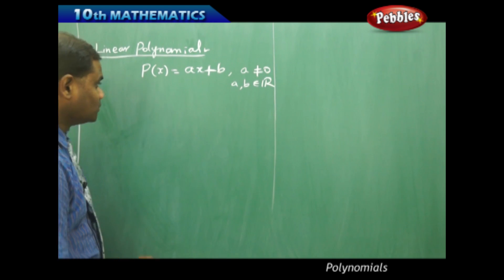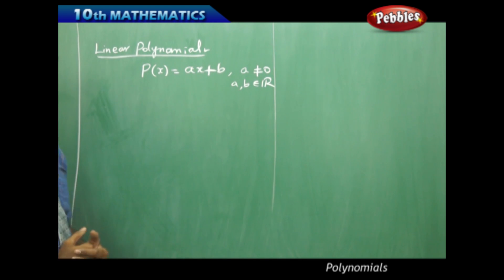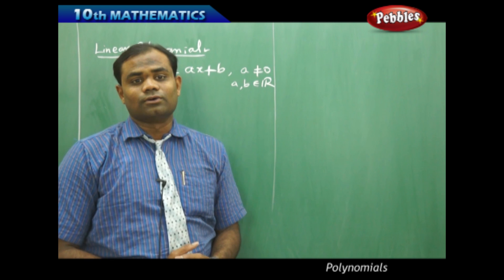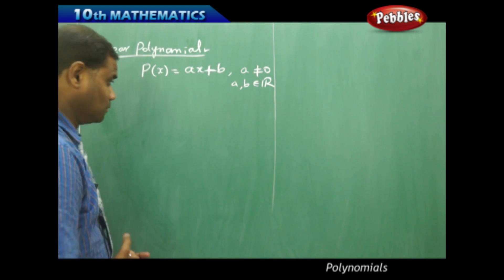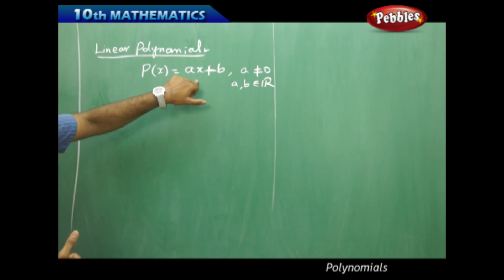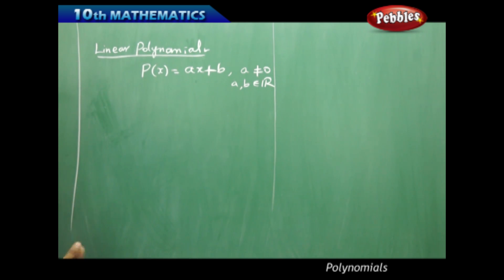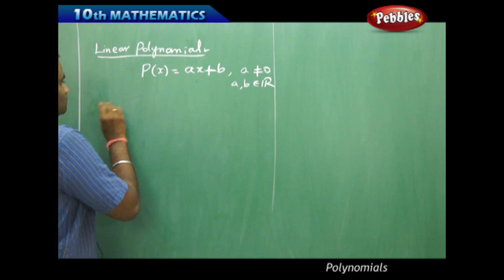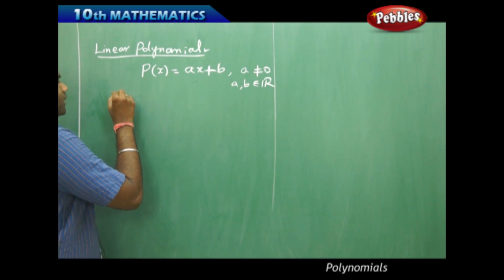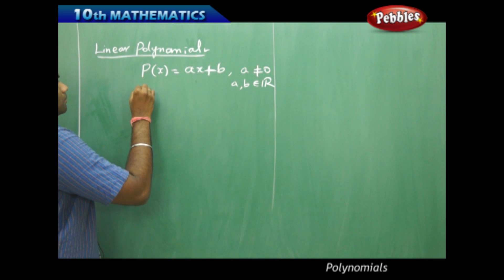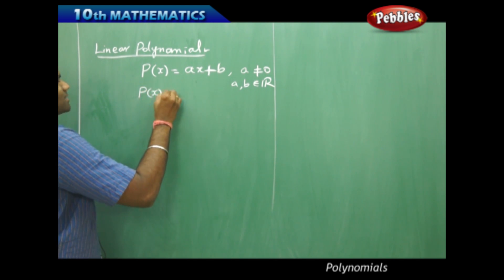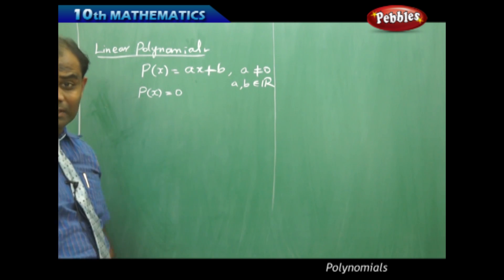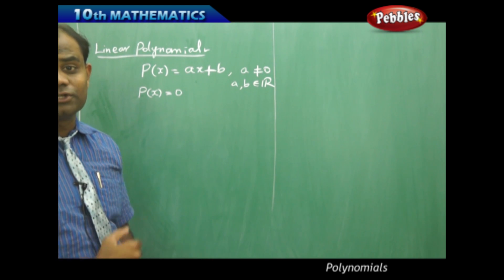They're real numbers. Now, using this linear polynomial, I would like to find the zero of this polynomial. As a general case, I'm going to derive the general formula for the zero of the linear polynomial. To find the zero of a polynomial, P of x equal to 0 is what we consider.